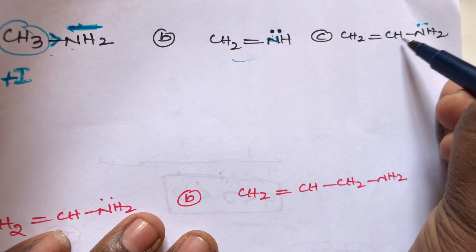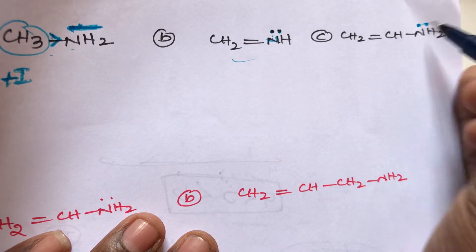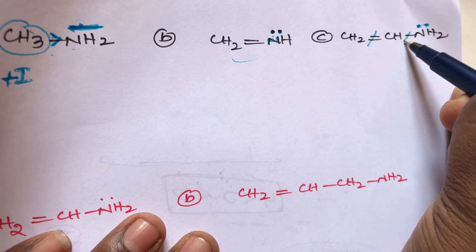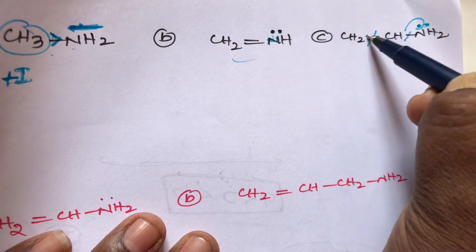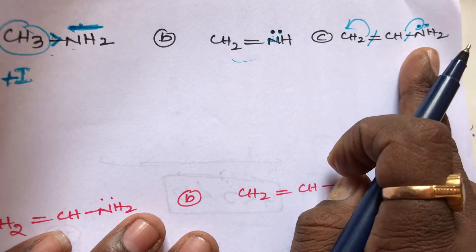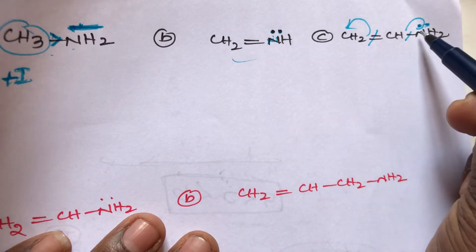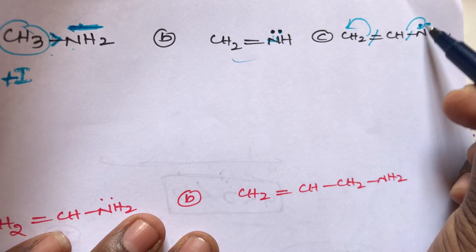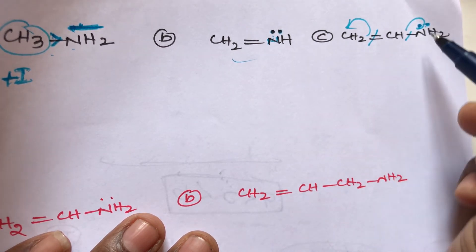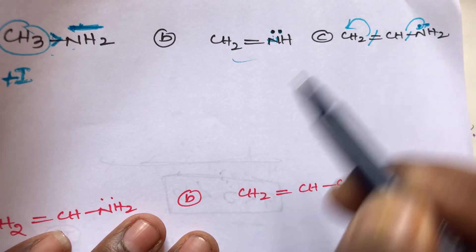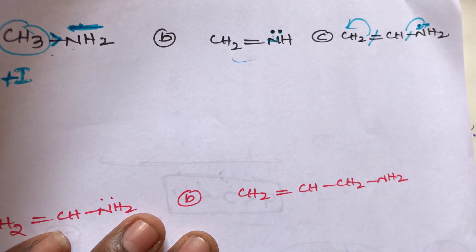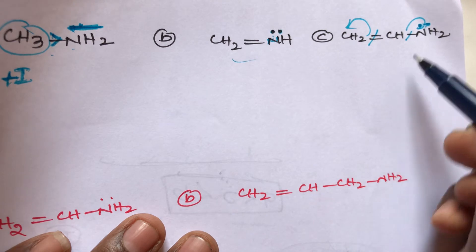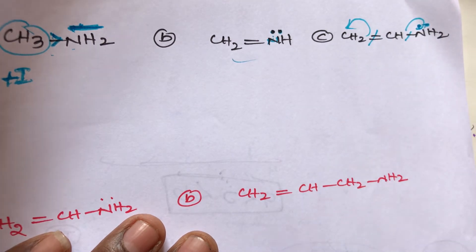In compound C: CH2 double bond, then CH single bond, then NH2. Here conjugation is present — double bond, then single bond, then lone pair. This lone pair participates in resonance and undergoes delocalization. So the lone pair on nitrogen is completely involved in resonance and effectively disappears — there is no lone pair density, no negative charge on nitrogen.